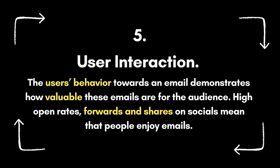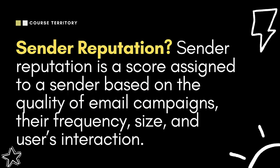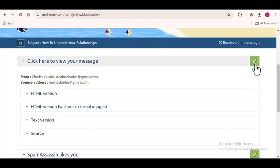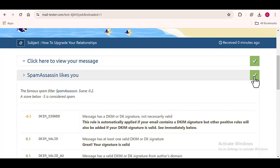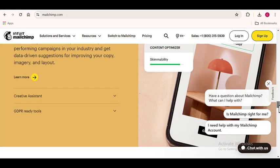Number five is user interaction. Your audience's interactions with your emails — such as high open rates, replies, and social shares — can help you keep your sender reputation in good shape. Finally, number six is your rate of unsubscribing. If you have an increasing number of people unsubscribing from your email list, this can really tell on your sender reputation. So you want to make sure that you are constantly checking your sender reputation. Mailtester can also be used to do that. The easiest way to avoid worrying about your sender reputation is to choose and make use of a reliable email marketing service.